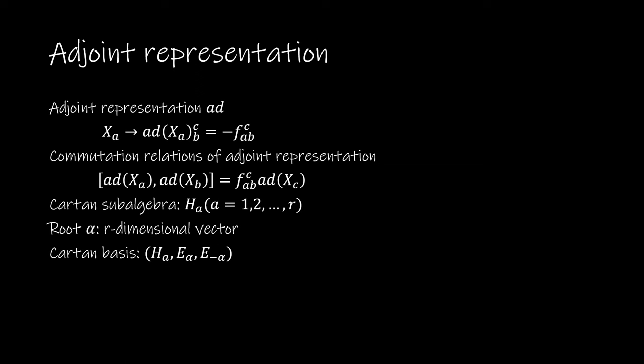The adjoint representation of H implies that if alpha is a root, minus alpha is also a root. Therefore, we can choose H_a, E_alpha, E_minus_alpha as the basis of Lie algebra.